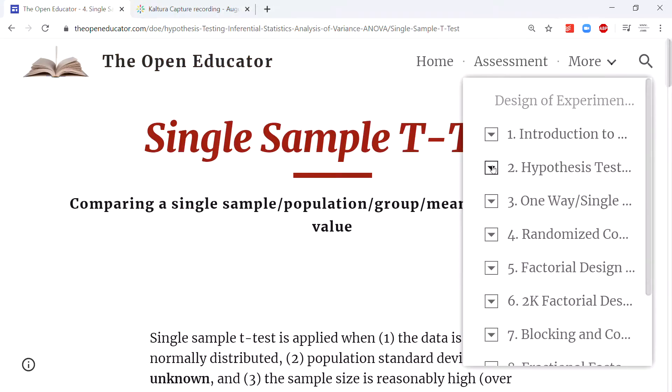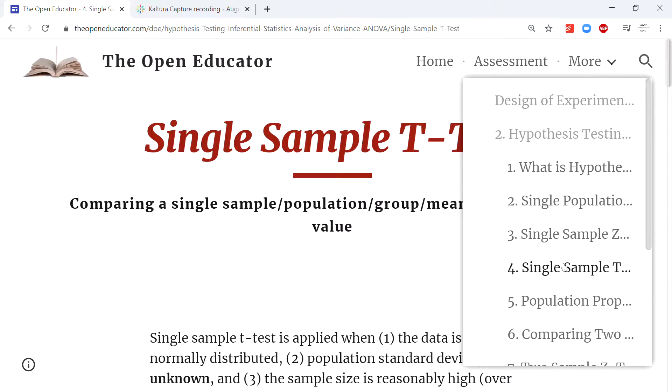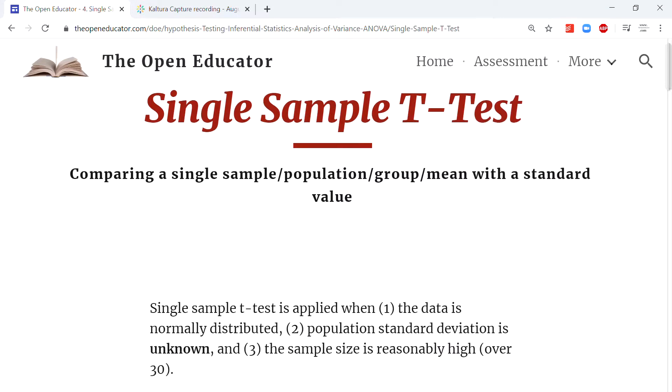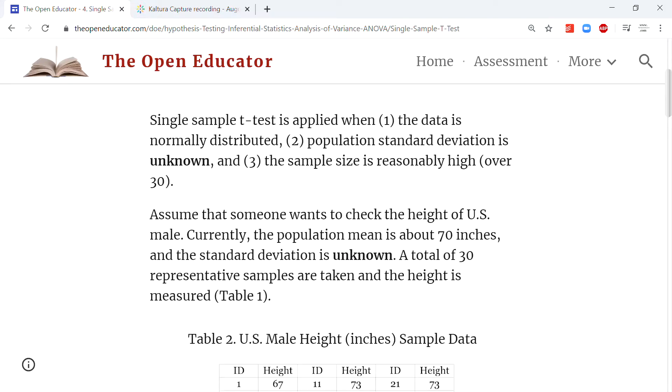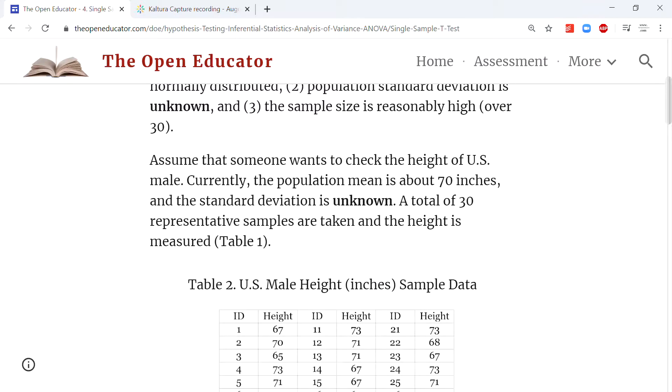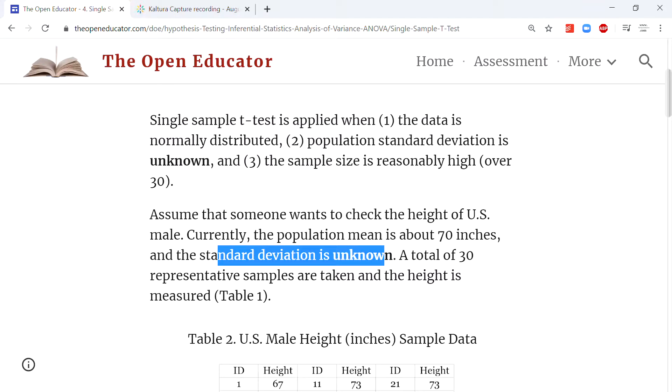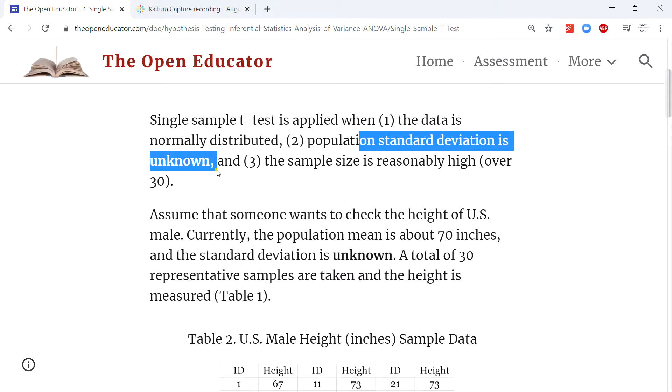An experimental situation for this would be testing the height of US males when we don't know the standard deviation. You apply t-test when the population standard deviation is unknown or outdated and we can't really use it. We're going to have to measure it from the sample.